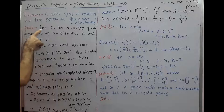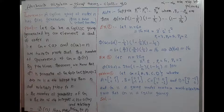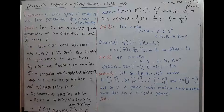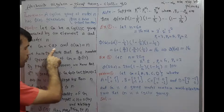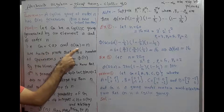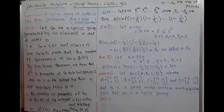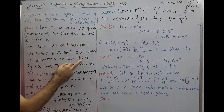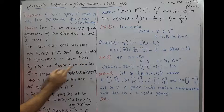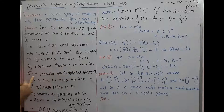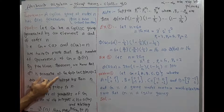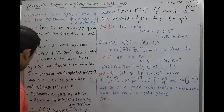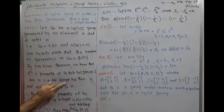Proof: Let G be a cyclic group generated by an element a and of order n, that is G = ⟨a⟩ and |G| = n. We have to prove that the number of generators of G is equal to the Euler totient function. By a previous theorem, we know that a^m generates G if gcd(m, n) = 1, where m is a positive integer less than n.